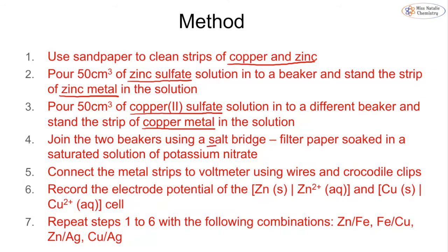We join the two beakers using our salt bridge. So this is our piece of filter paper soaked in our saturated solution of potassium nitrate. And then we connect the metal strips to the voltmeter using our wires and our crocodile clips. We should then see an electrode potential or a voltage on our voltmeter, and we then note that down. And that is for our zinc-copper cell. We then repeat all of these steps with our different combinations: zinc and iron, iron and copper, zinc and silver, and copper and silver.